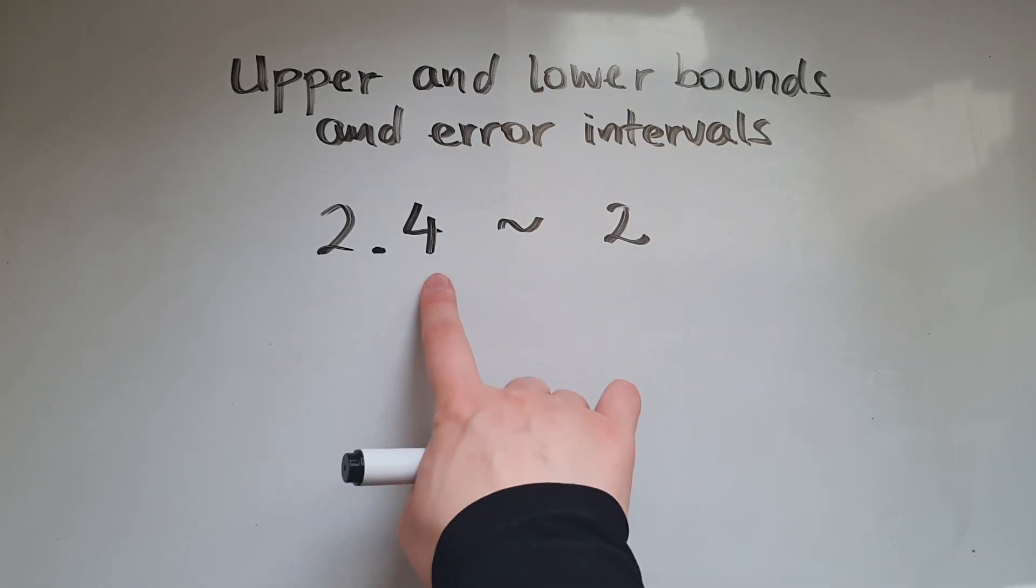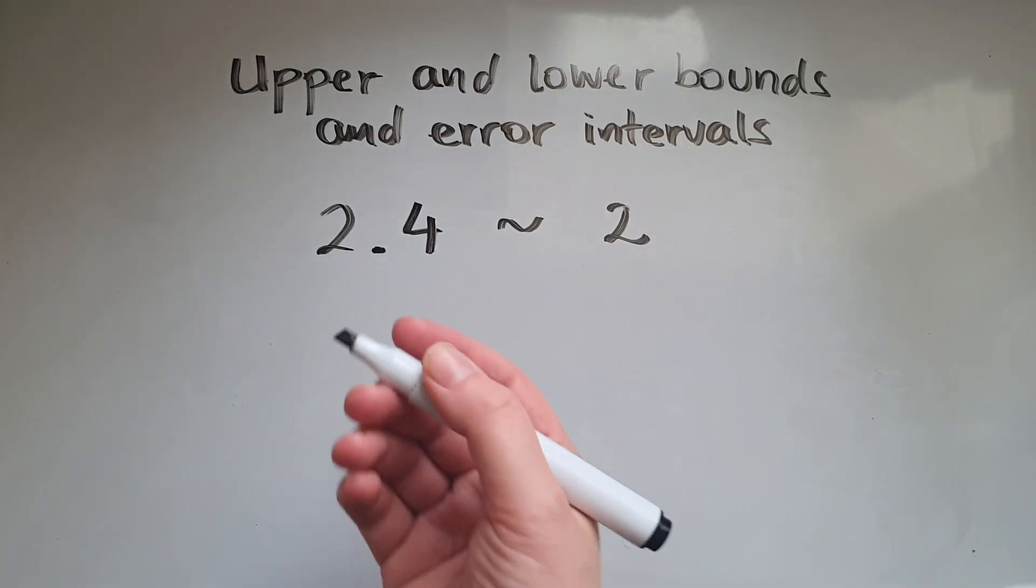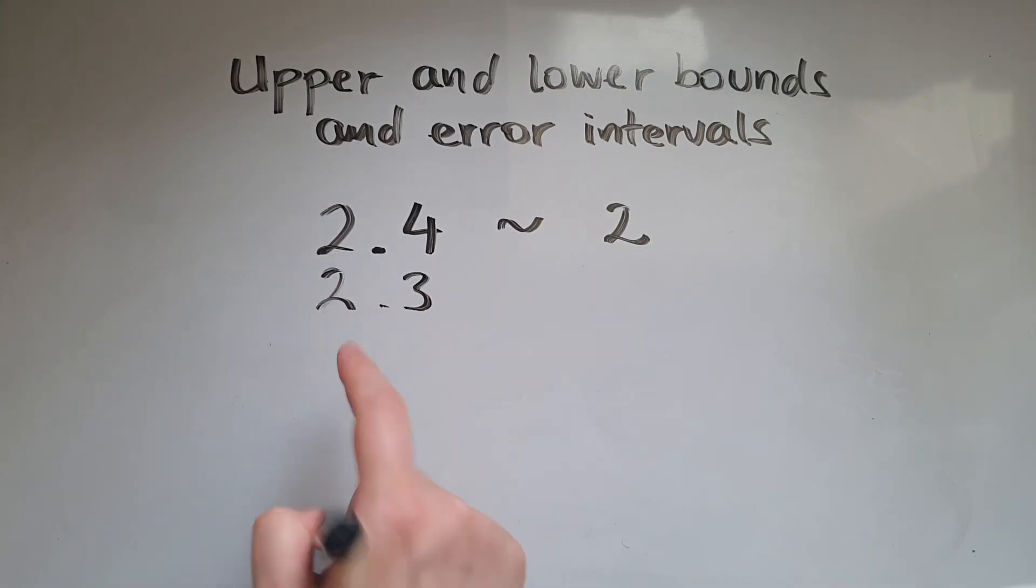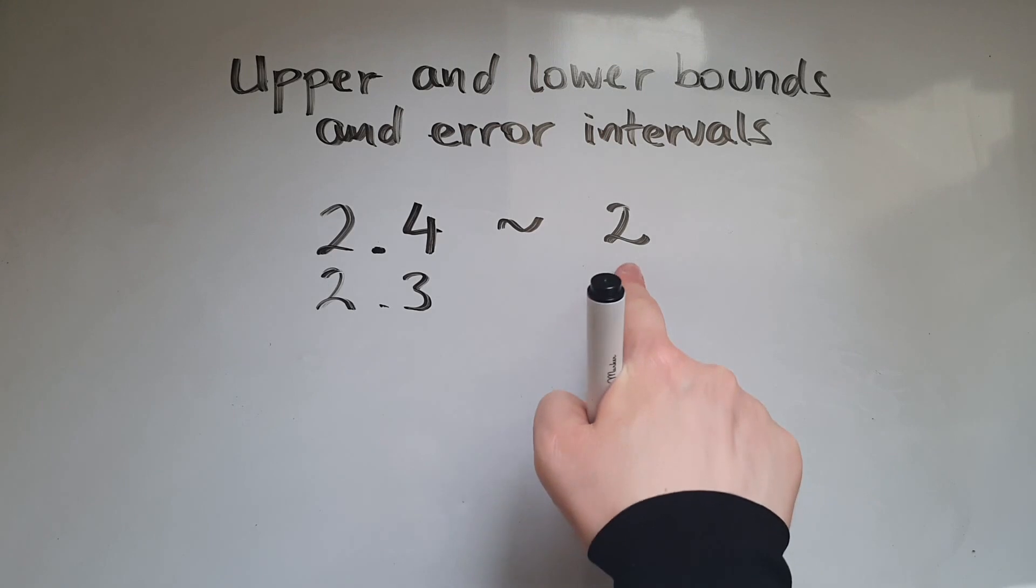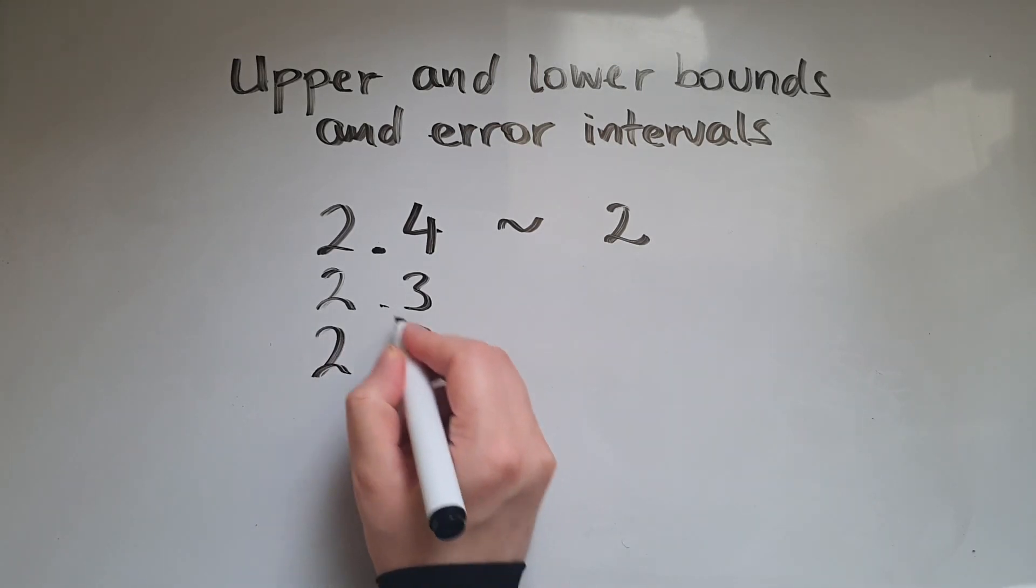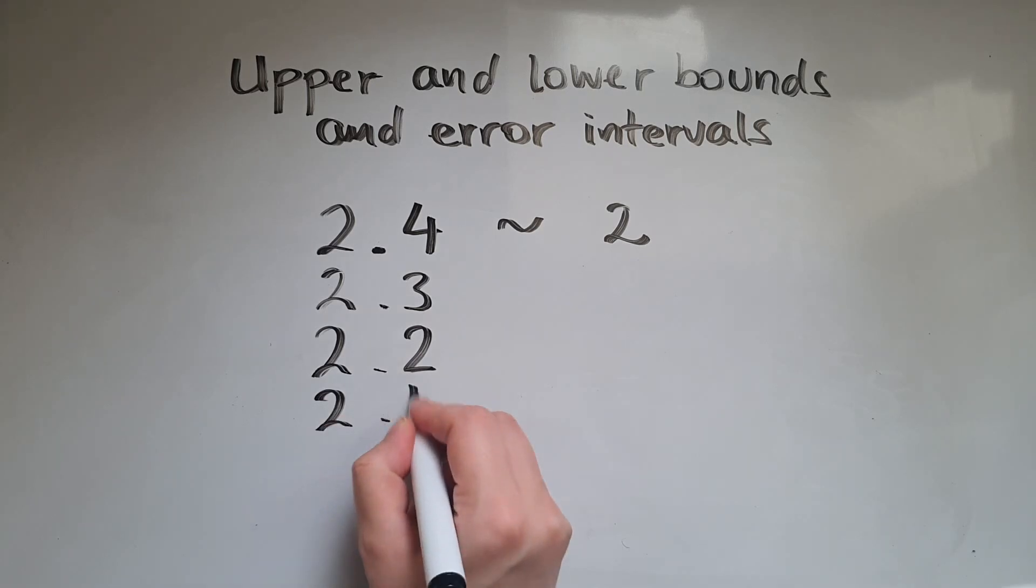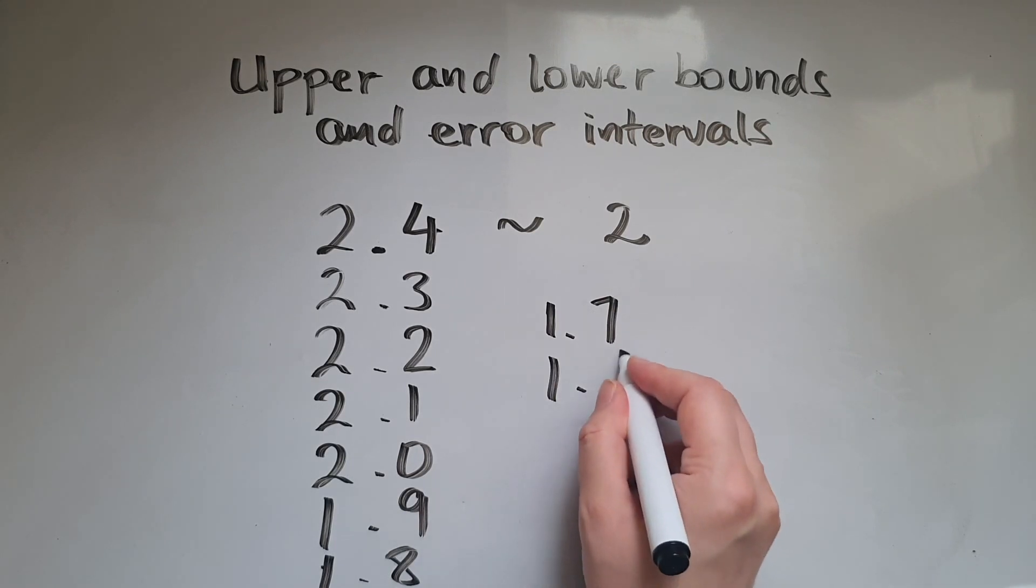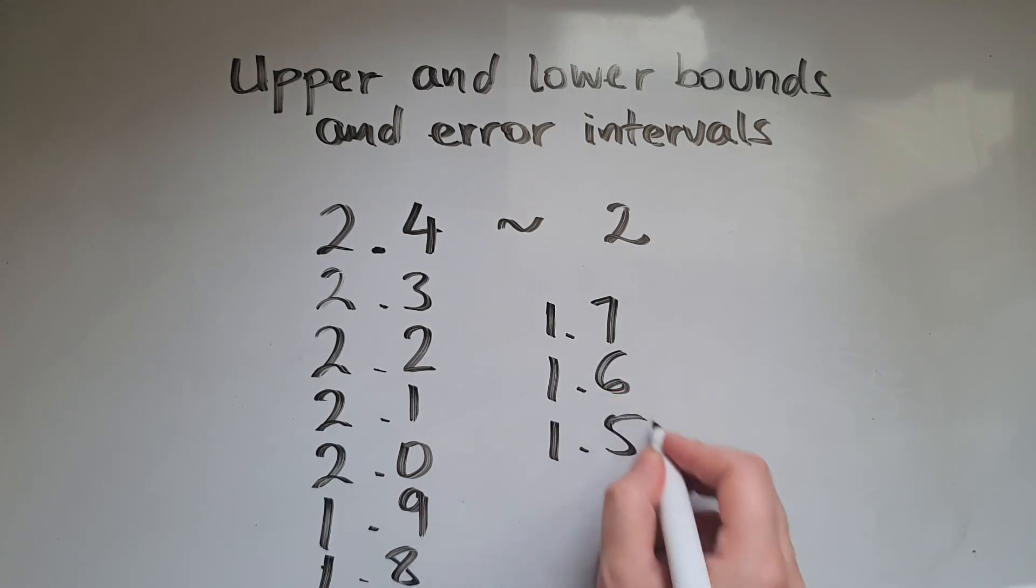So 2.4 is one of them. 2.3 is also, because if I round 2.3 to the nearest whole number it's going to give me 2. 2.2 as well, 2.1, 2.0, 1.9, 1.8, 1.7, 1.6, 1.5, and this is where I stop.